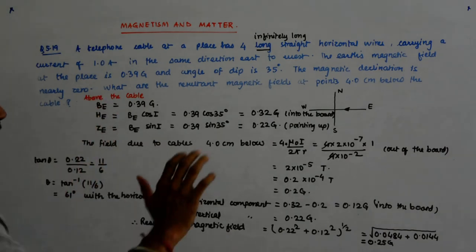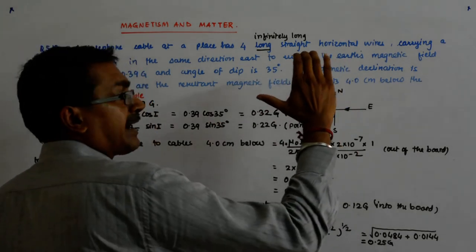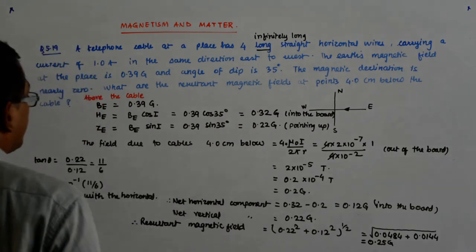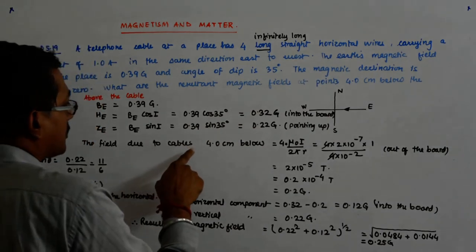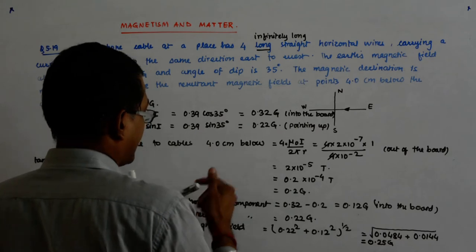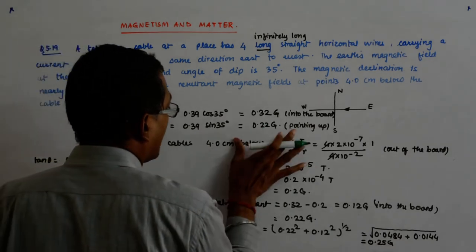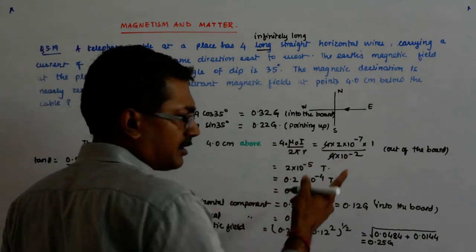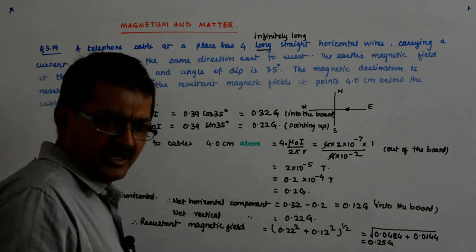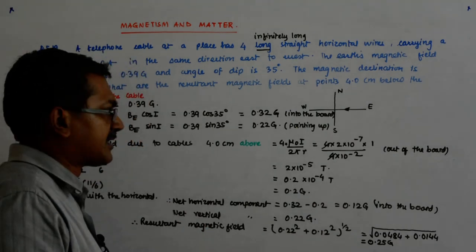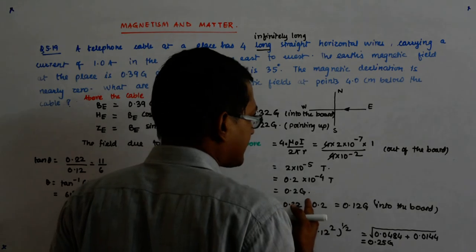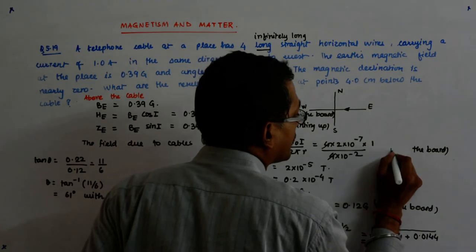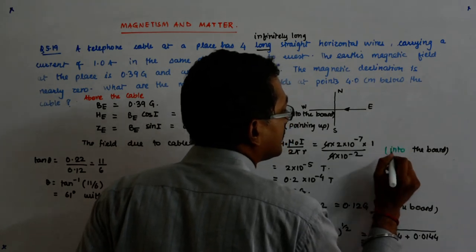Now, above the cable, by right hand rule, the field is into the board. So that is the first thing. The field due to cables 4 centimeter above is equal to, the magnitude remains the same, right? Because R remains the same and I remains the same. So everything remains the same. This becomes into the board.